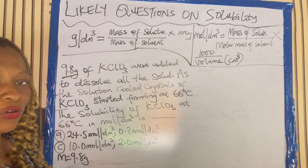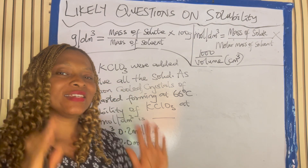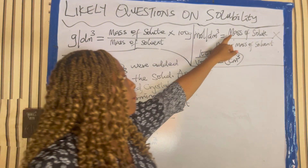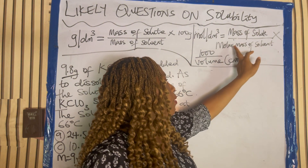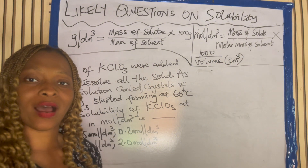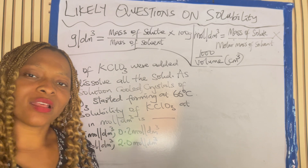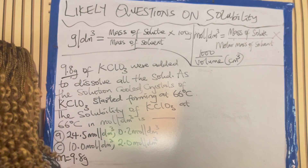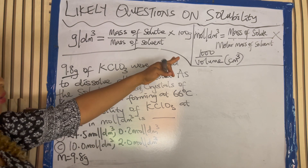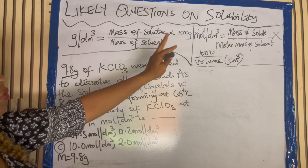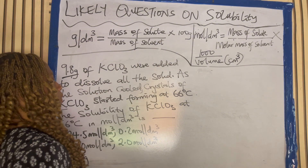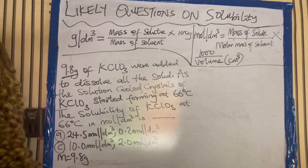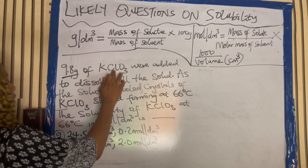In mole per dm cube — once you hear mole per dm cube, which formula comes to your mind? Mass of solute over molar mass times 1000 over volume. The question says calculate in mole per dm cube. Using that formula, mass of solute over molar mass — we've been given the mass of the solute. Let's calculate the molar mass.